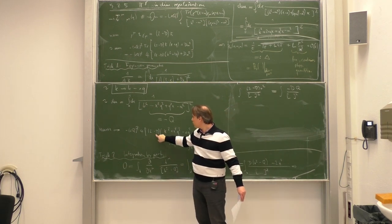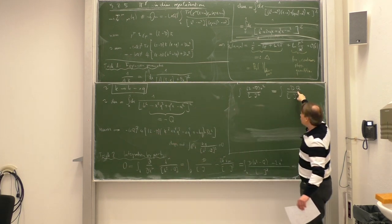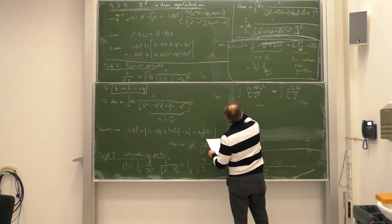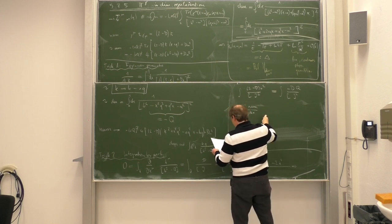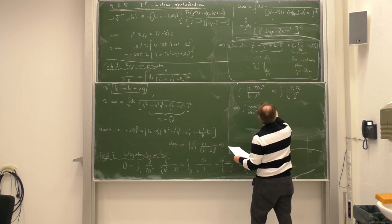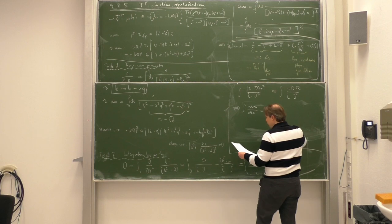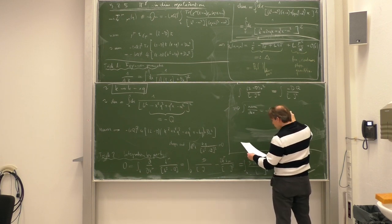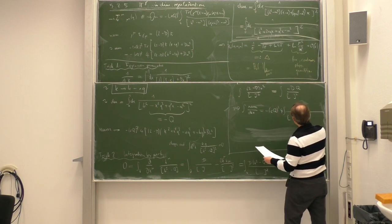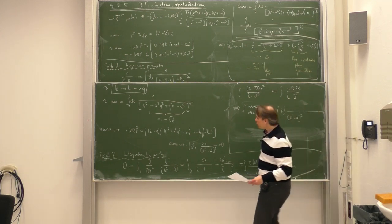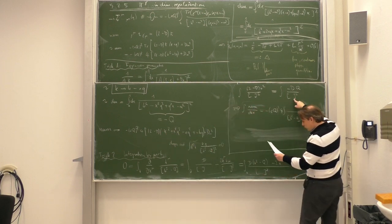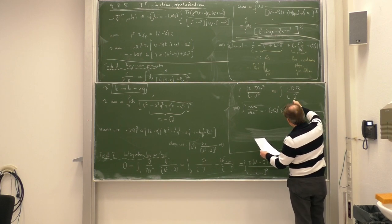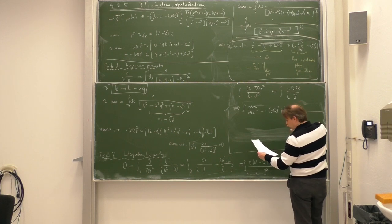The integral of the numerator divided by the denominator is now: minus e times Q squared times 4 times the integral over k, where (2 minus d) times k squared has become minus d times Q in the numerator, with denominator (k squared minus Q) squared.